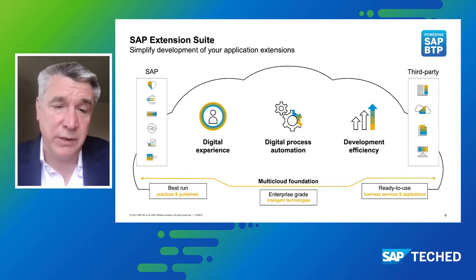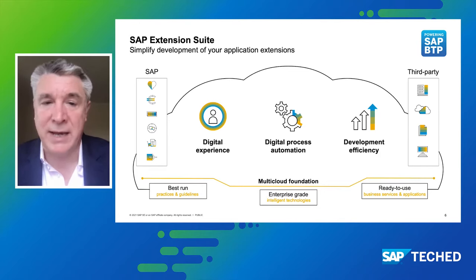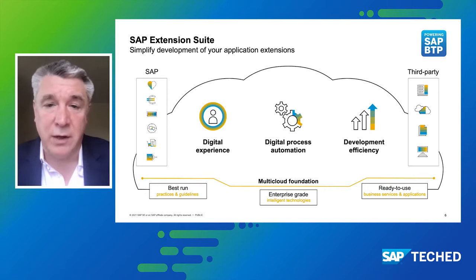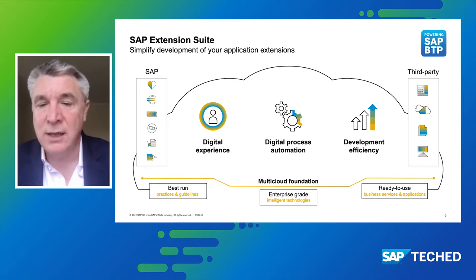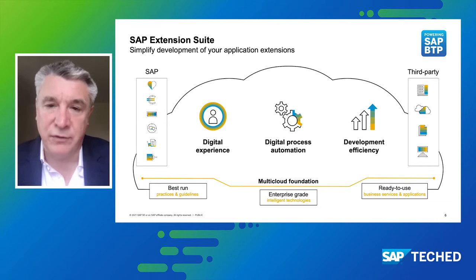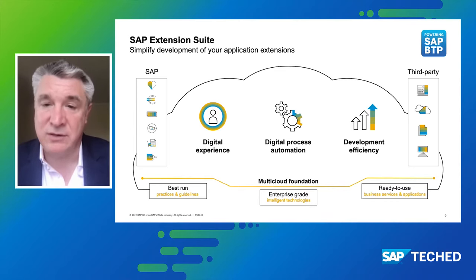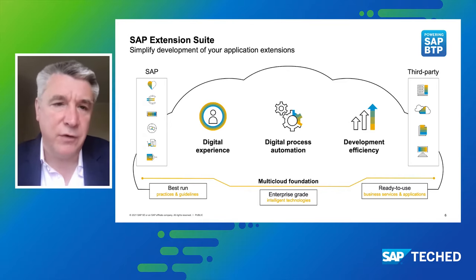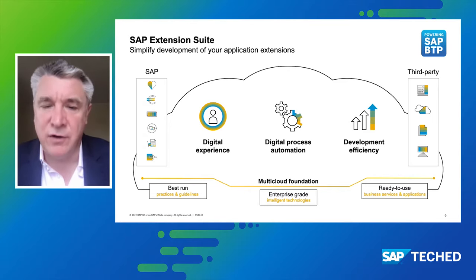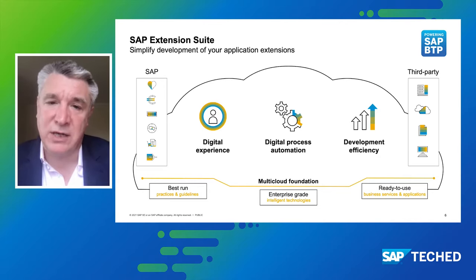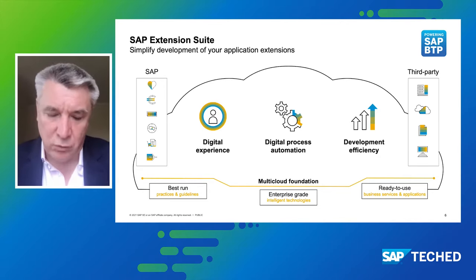First, we look at digital experience — where you'll find WorkZone, the launchpad, and mobile services. Secondly, digital process automation, where you'll find our digital process automation studio, our workflow capability, and robotic process automation. And finally, developer efficiency — where you'll find the developer tools, covering the developer continuum from low-code, no-code through to pro-code, leveraging both AppGyver and the Business Application Studio. Before we go further, I want to look at why you should leverage the extension suite to drive process automation within your company.